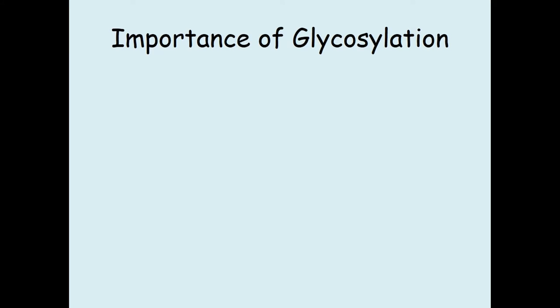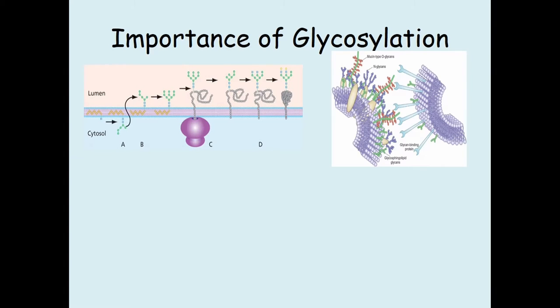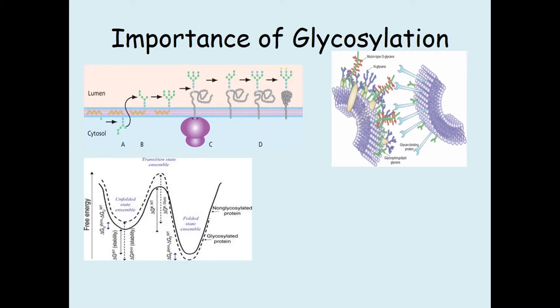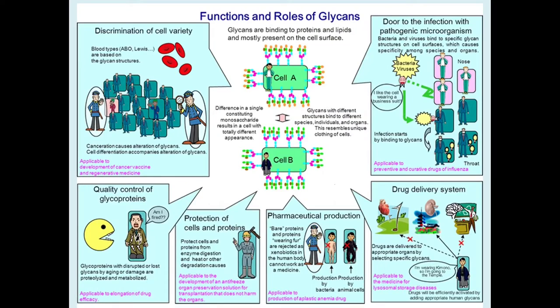As discussed earlier, glycosylation is the most common post-translational modification of protein. It plays an important role in protein folding, interaction, stability, as well as signal transduction. By regulating protein activity, glycosylation is involved in the normal functioning of the cell and in the development of diseases.